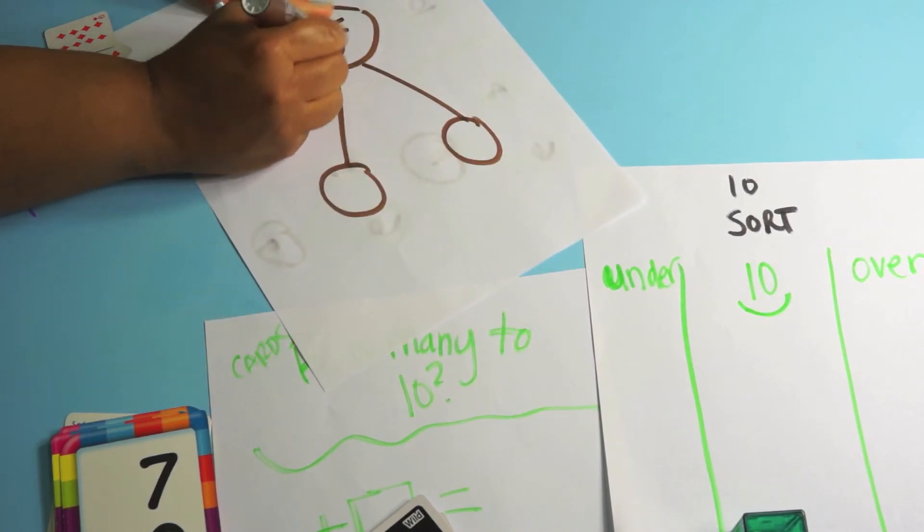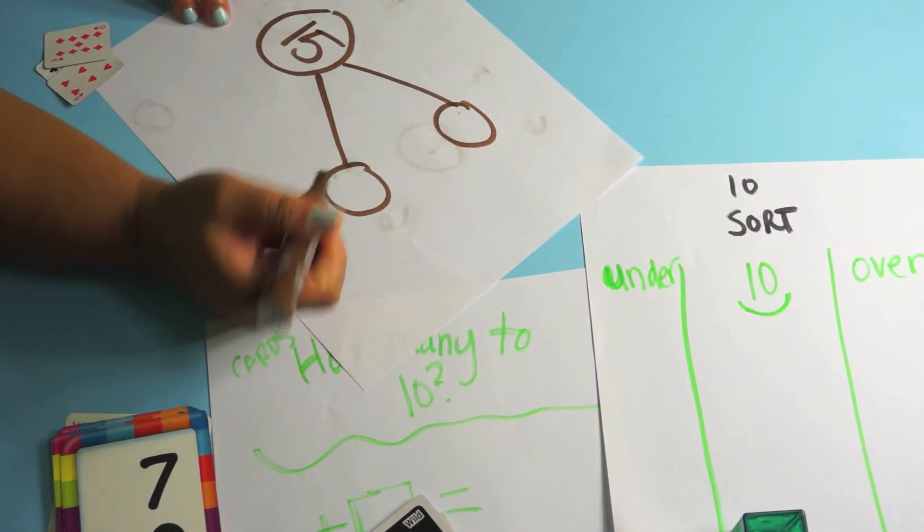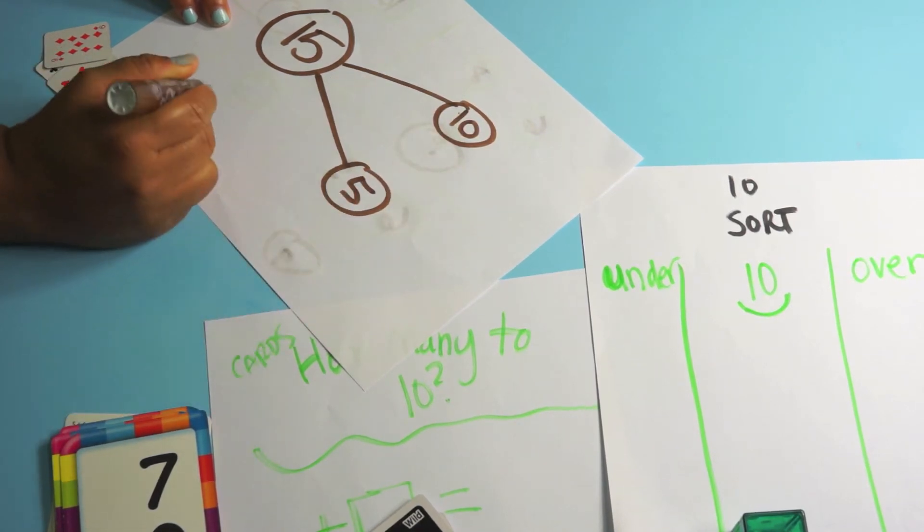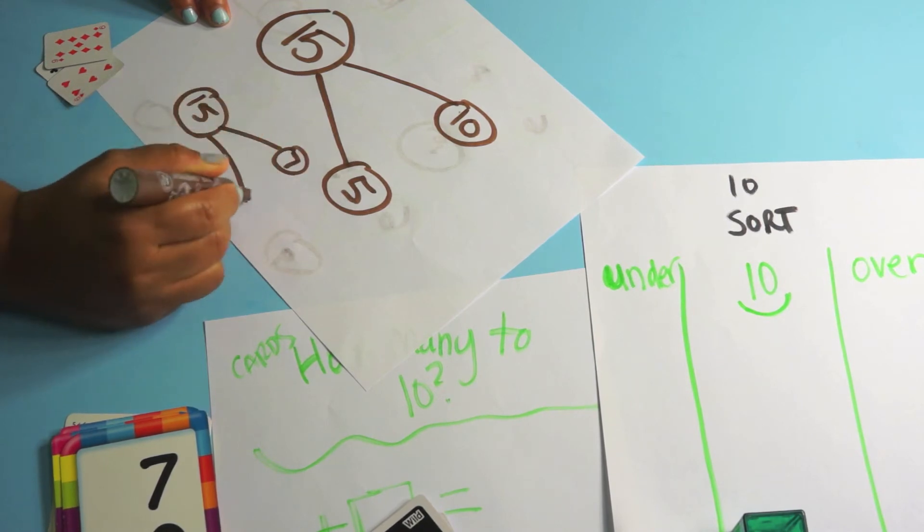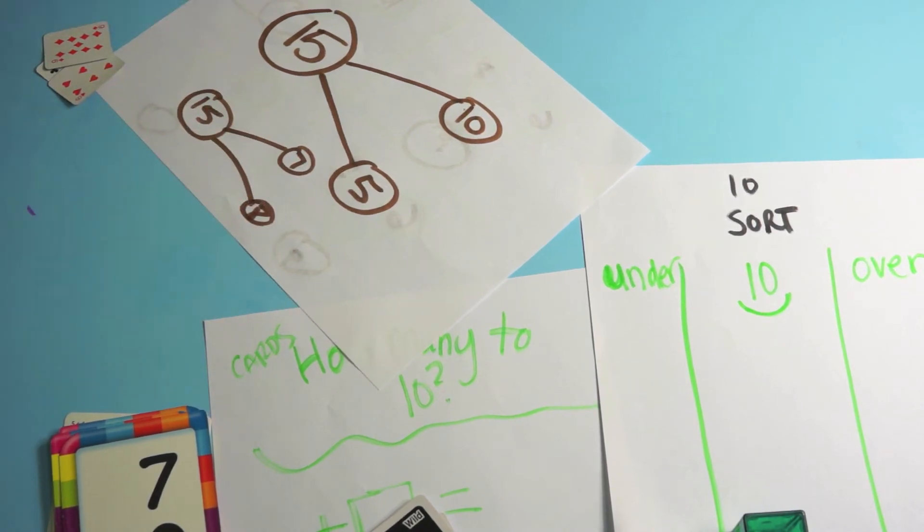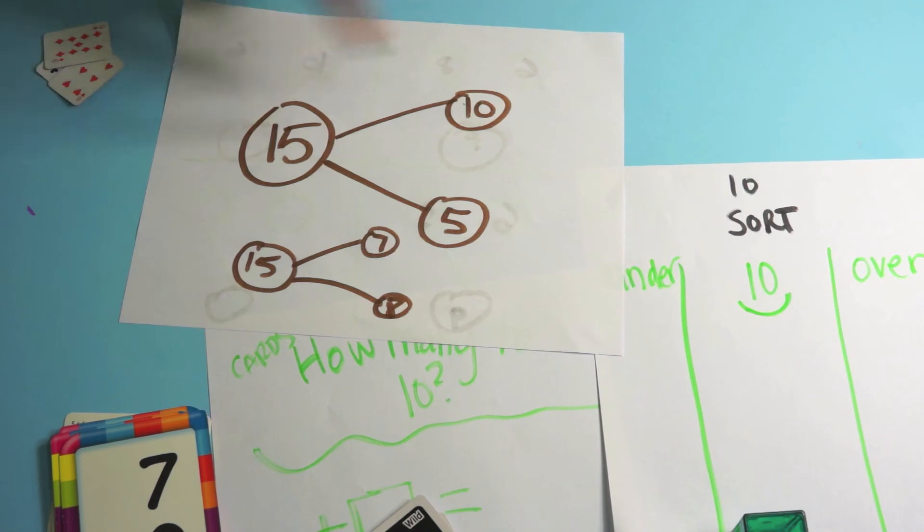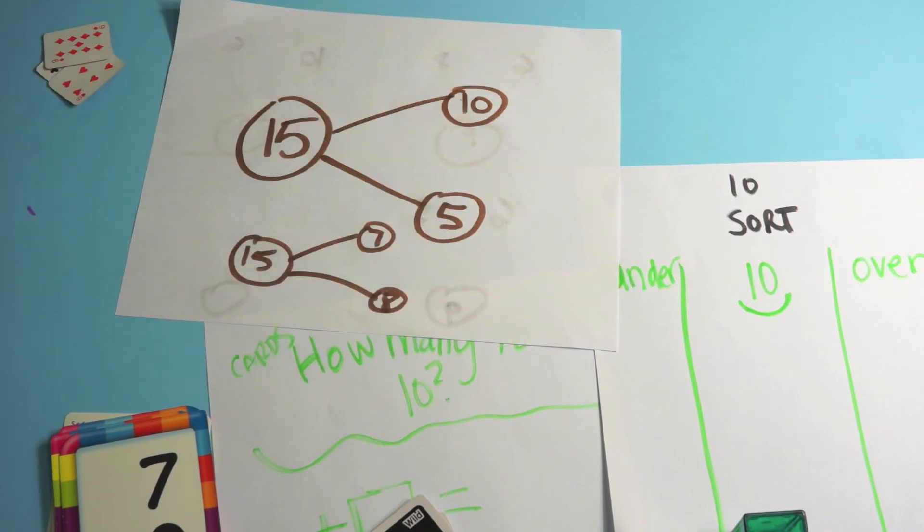So if we looked at, here's a number bond. You could have 15 and how does that break out into 10 and 5 is one way, but we could also have 15 and it could be 7 and 8. So you could have an anchor number and have the kids build what kinds of number bonds are going to be all the way around.